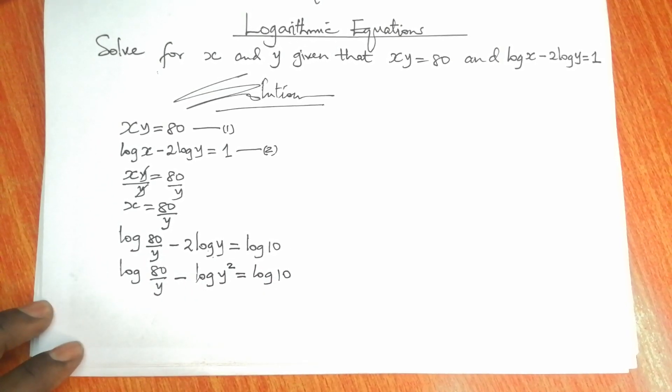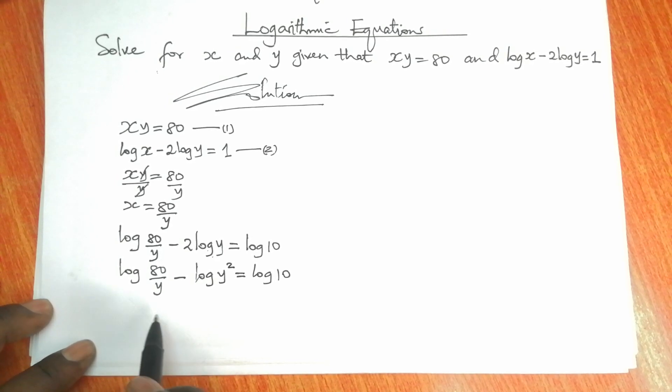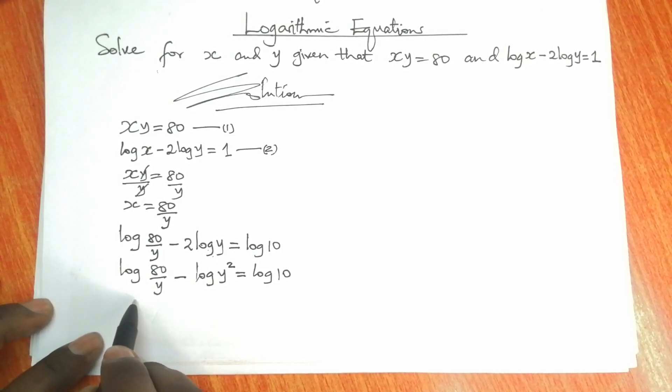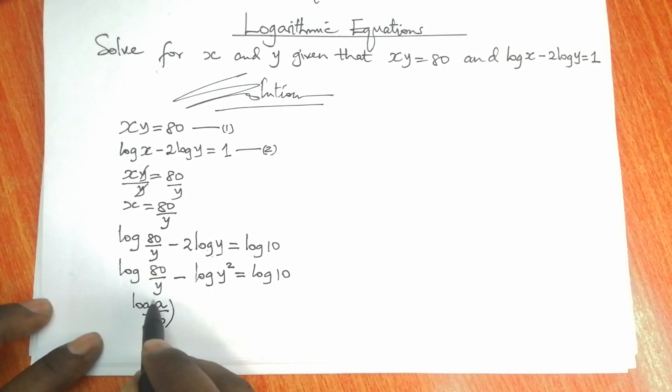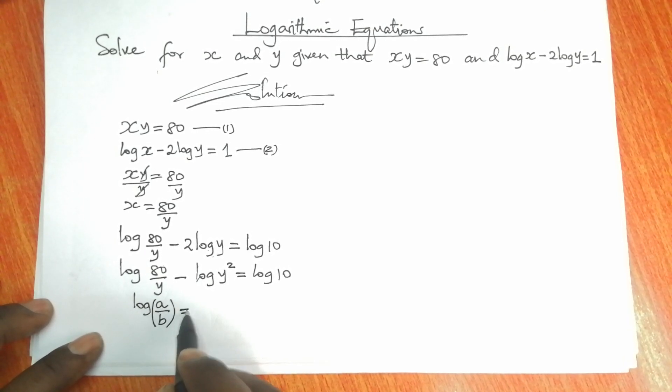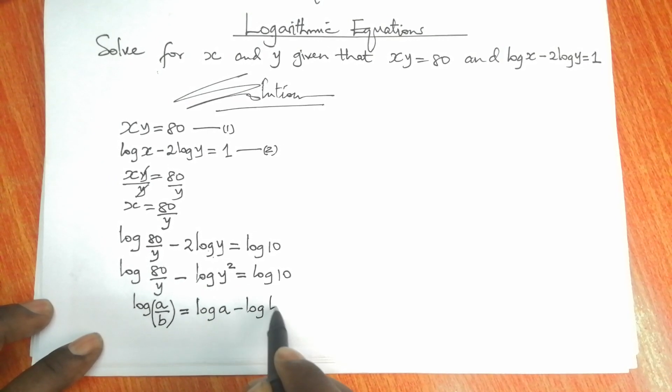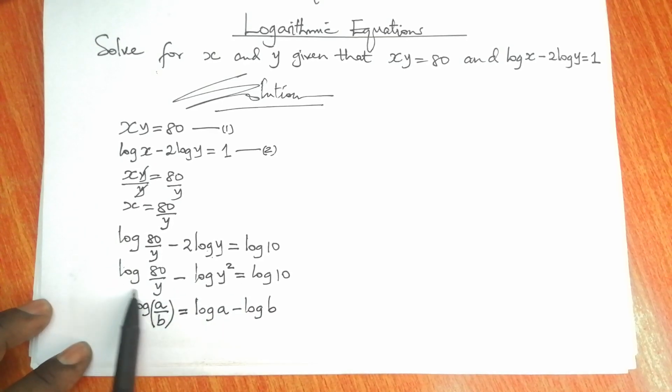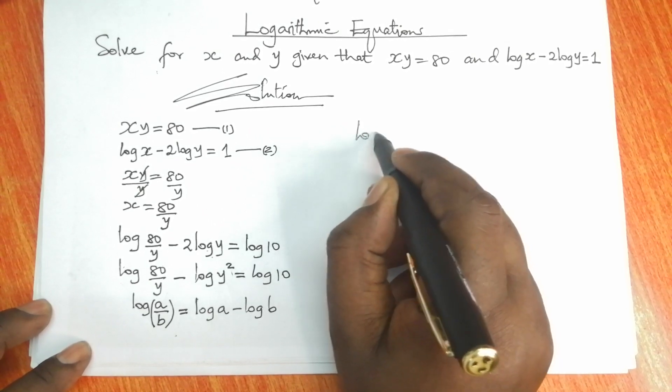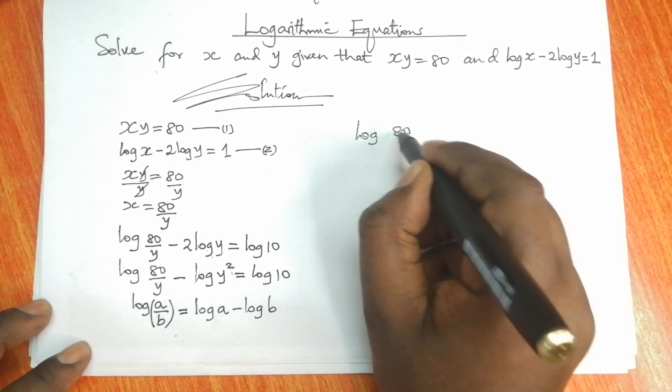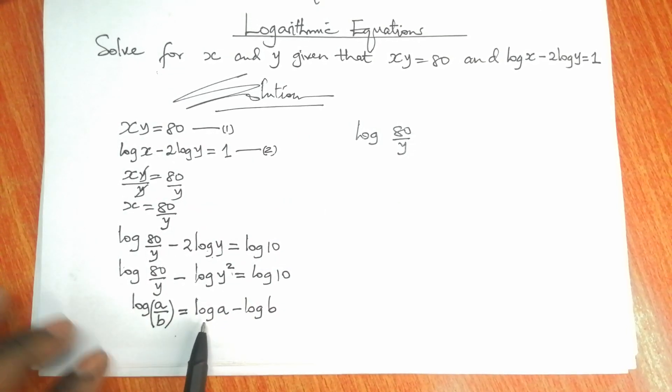And from the laws of logarithms, we know that given log a divided by b, we take the logarithm of a minus the logarithm of b. So we're going to rewrite this expression in this form. We're going to have the logarithm of 80 over y divided by y squared.